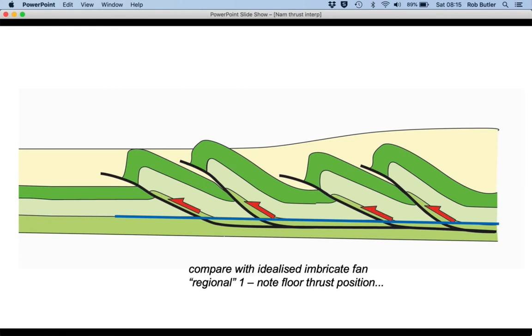And notice that where the light green package comes back down to its regional again, the underlying floor thrust is flat.